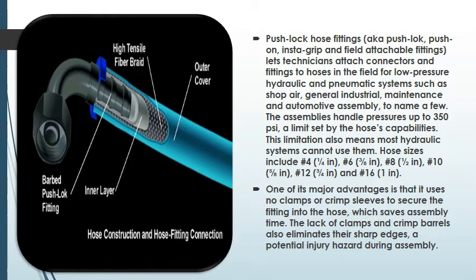This limitation also means most hydraulic systems cannot use them. One of the major advantages is that it uses no clamps or crimp sleeves to secure the fitting into the hose, which saves assembly time. The lack of clamps and crimp barrels also eliminates their sharp edges, a potential injury hazard during assembly.